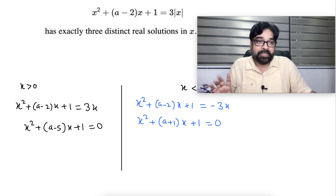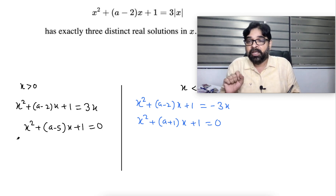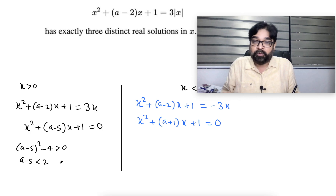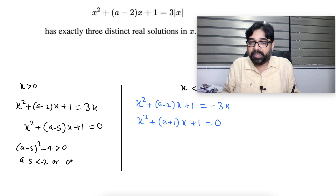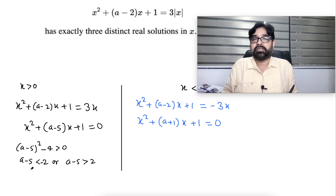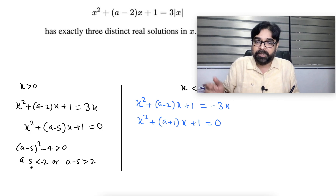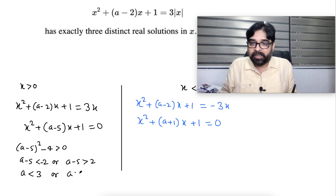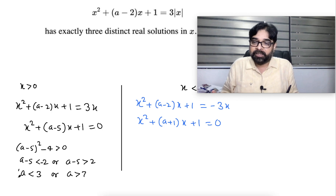Taking the case where the first quadratic (x > 0) has two different roots: D greater than zero means (a minus 5) squared minus 4 is greater than zero. So (a minus 5) will be less than minus 2 or greater than 2. Solving the inequality gives a less than 3 or a greater than 7. This is the first condition.